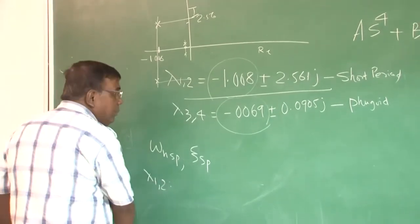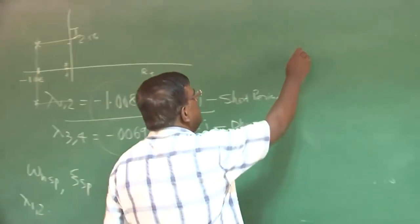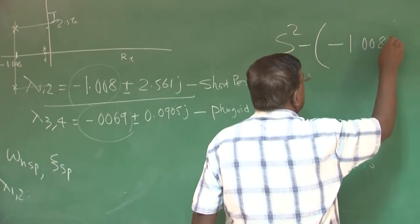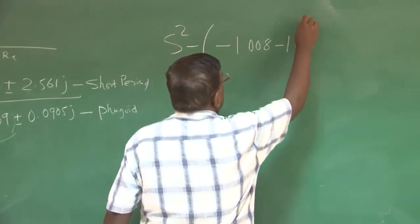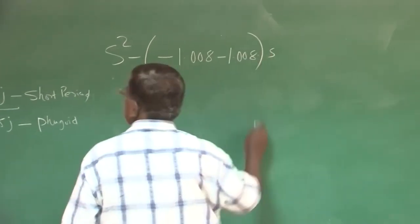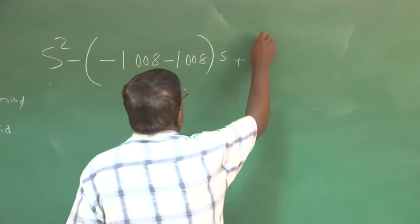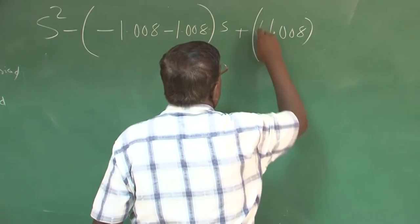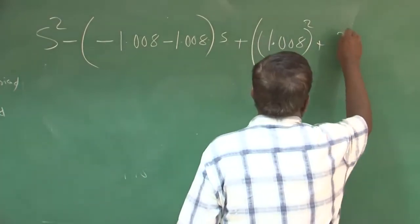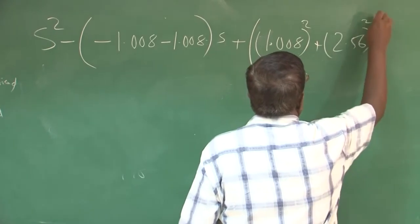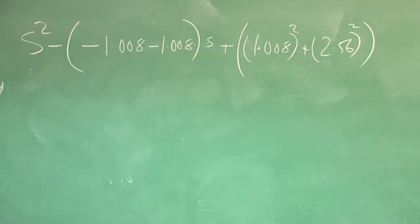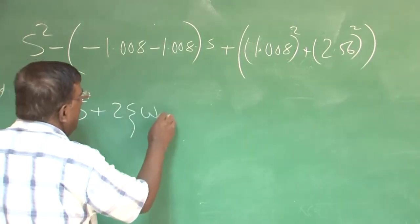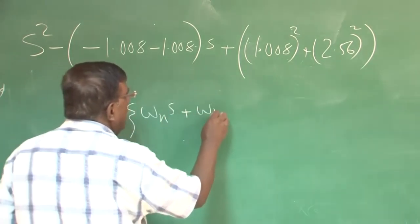I will construct the equation as s² minus sum of the roots, that is minus 1.008 minus 1.008, sum of the root into s plus product of the root will be 1.008² plus 2.56².